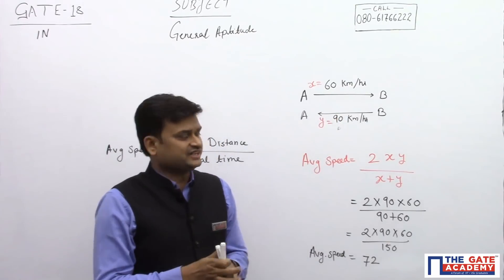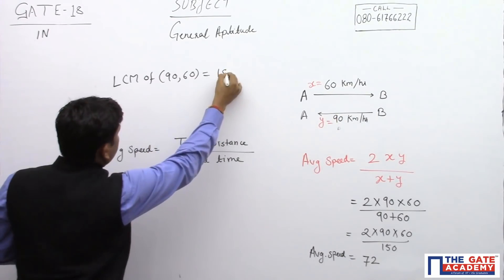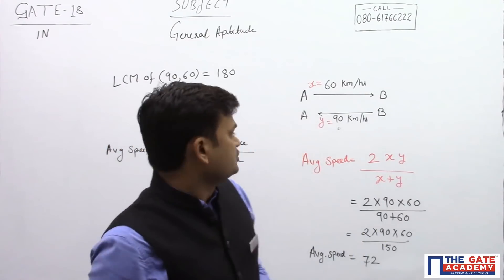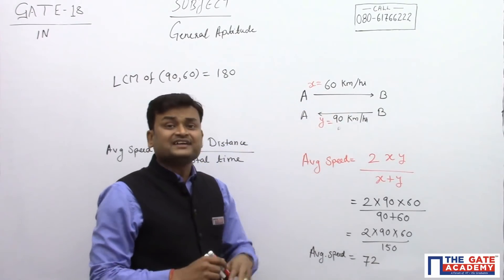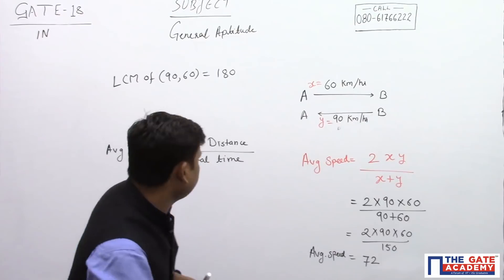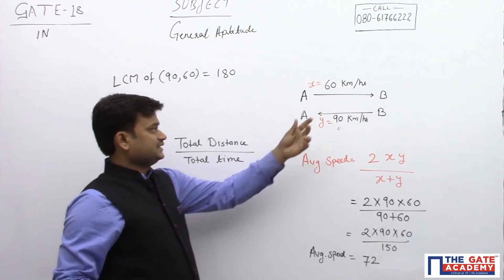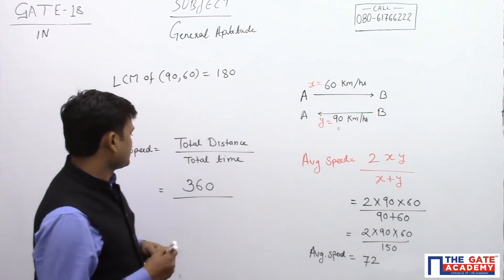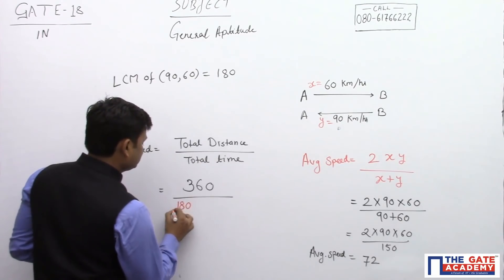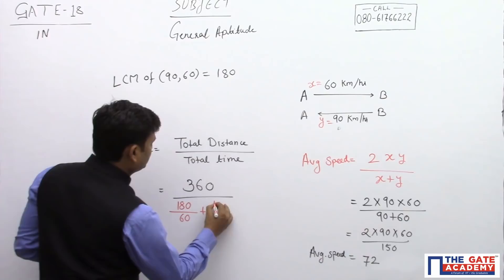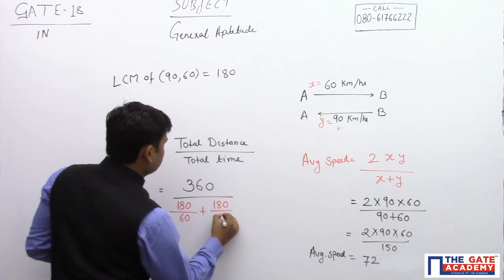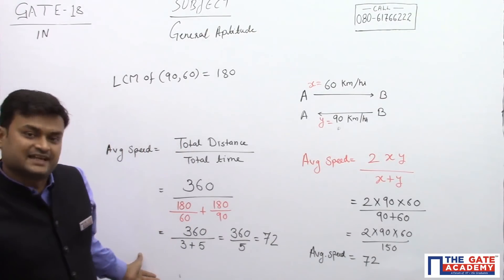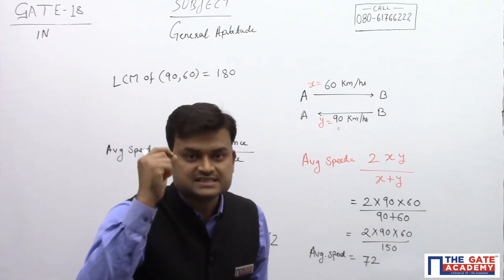I will find the LCM of 90 and 60, which is 180. So I assume the one-way distance is 180. That makes the total distance 360. Total time is the time taken for the onward journey plus the time for the return journey: 180 divided by 60, plus 180 divided by 90. In this second method also, you get the answer as 72.